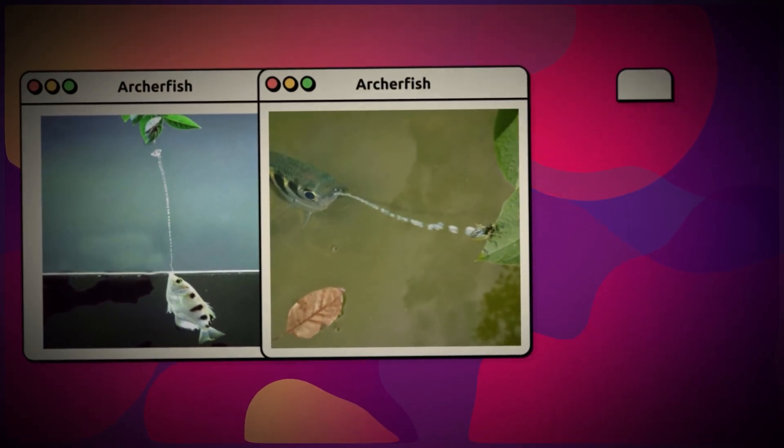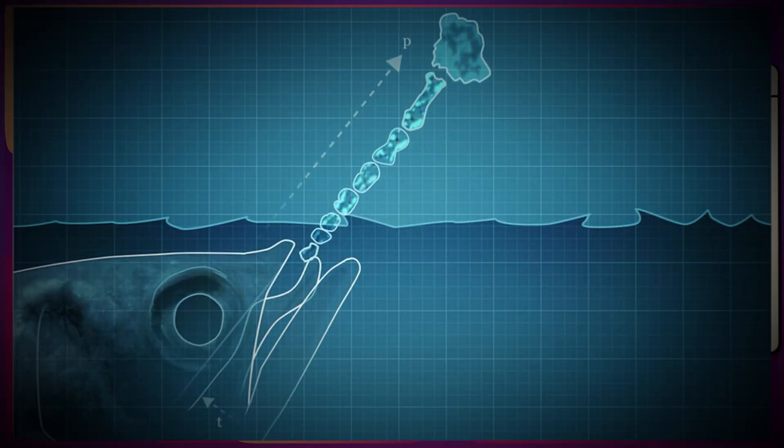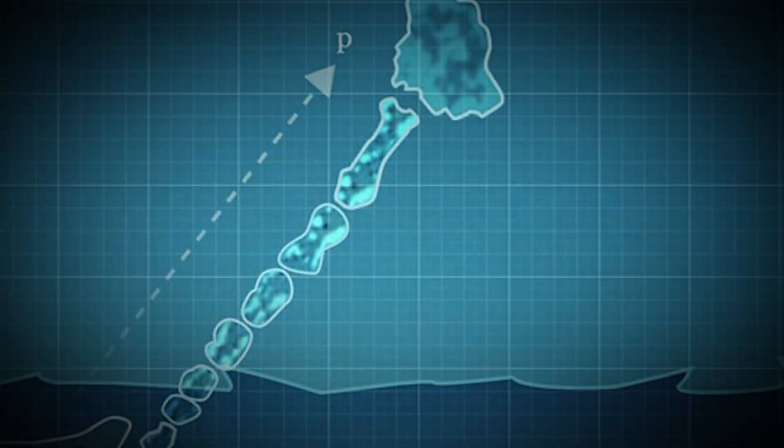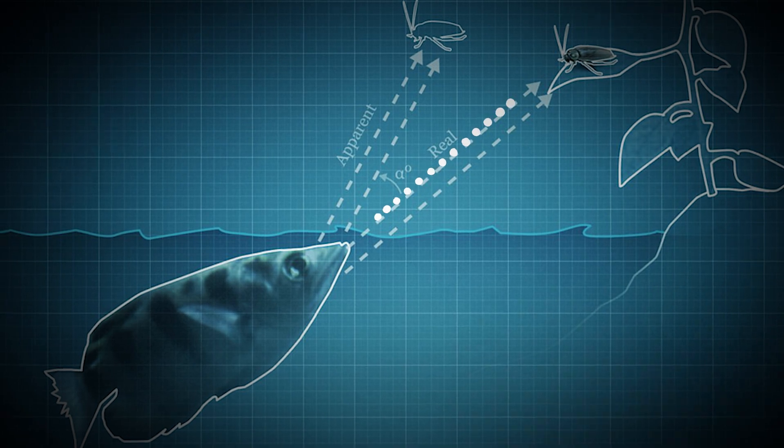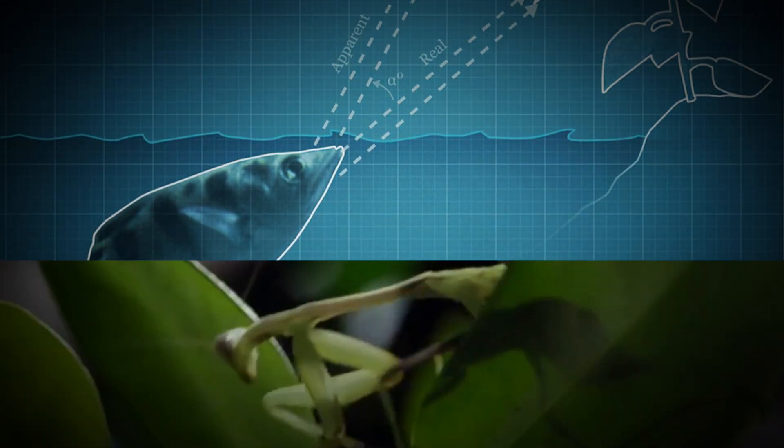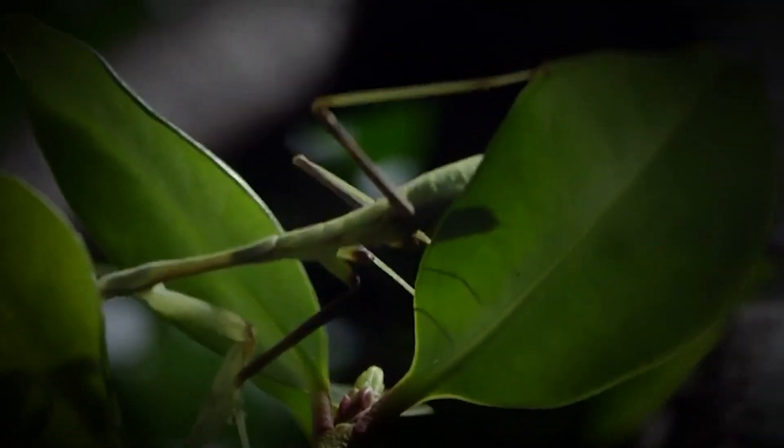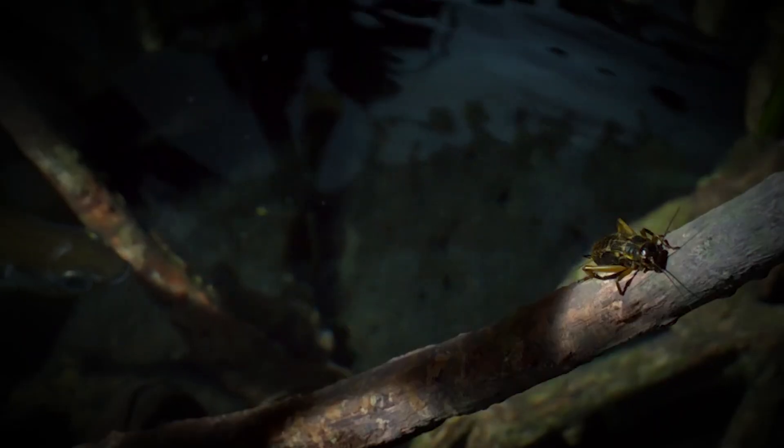But wait, it gets even cooler. Archerfish are able to adjust the velocity and direction of their water jet based on the size and distance of their prey. This means that they can accurately aim at prey that is above the surface of the water, compensating for the refraction of light and water.